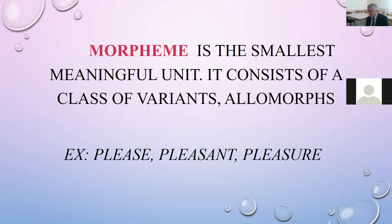A morpheme is the smallest meaningful unit. The morpheme consists of a class of variants, morphs which are either phonologically or morphologically conditioned. For example, the words please, pleasant, and pleasure.